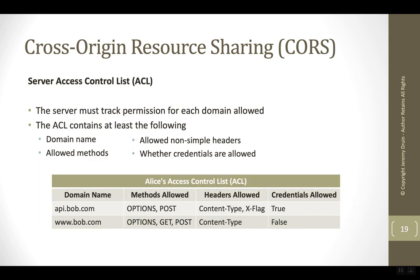In order for servers to implement CORS securely, they need to maintain an access control list. This access control list could be thought of as a table, though it doesn't necessarily have to be implemented in a database or as a table — it could be a flat file or any other format. The key is that the server maintains a list of its friends by domain name and keeps track of how those friends are allowed to interact, including which methods and headers the calling domain is allowed to use.